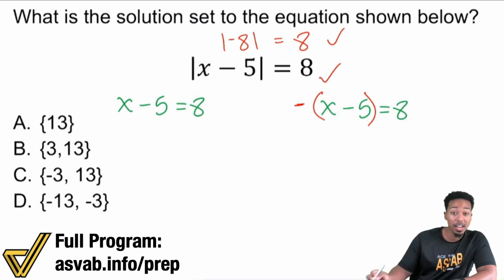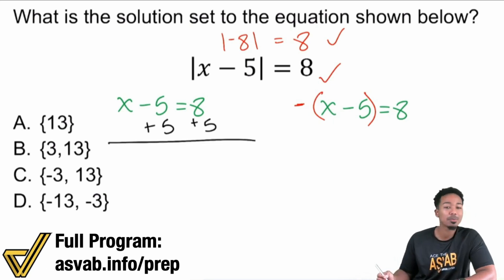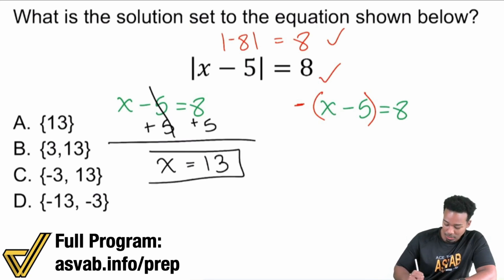So this one on the left, x minus 5 equals 8. To solve an equation, perform the opposite operation. The opposite of subtracting 5 is adding 5 to both sides. So by doing that, cancels on the left and we get x equals 13. So that's one of the answers.